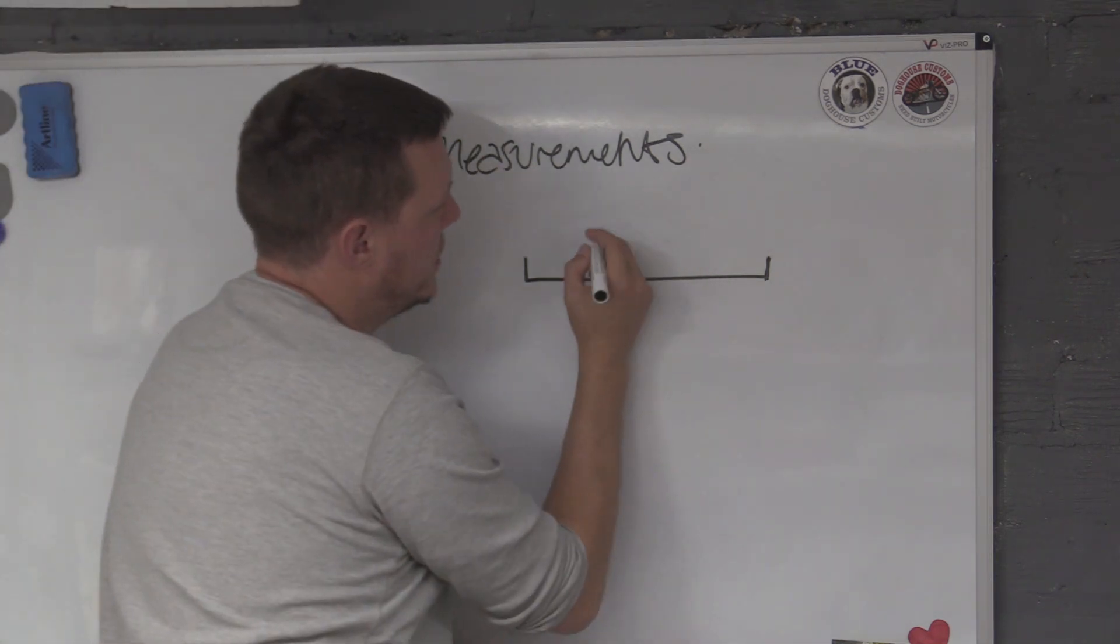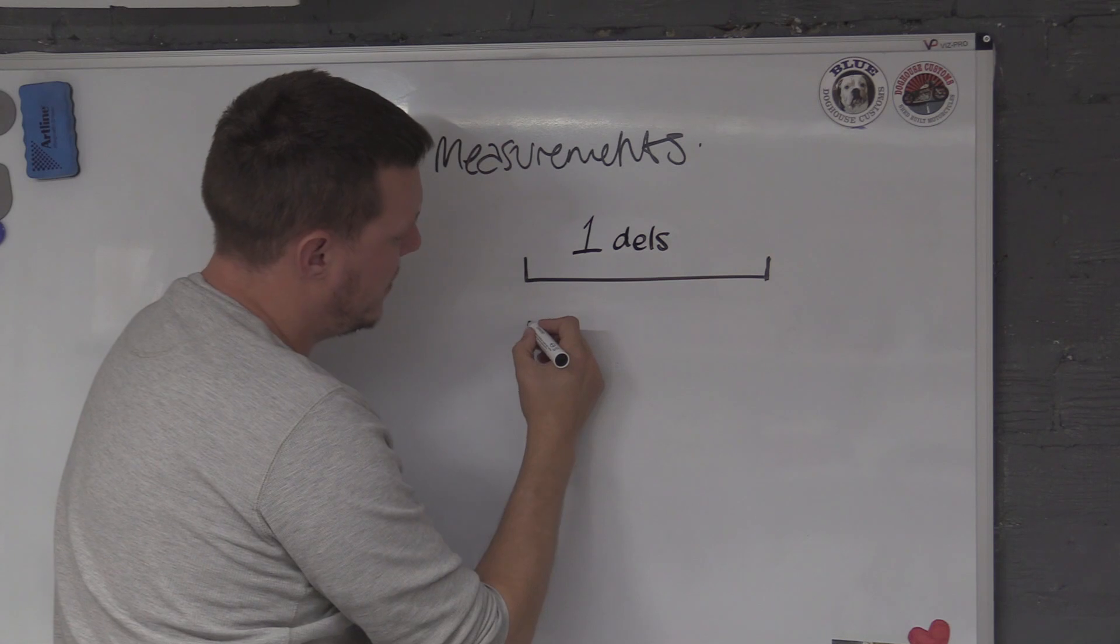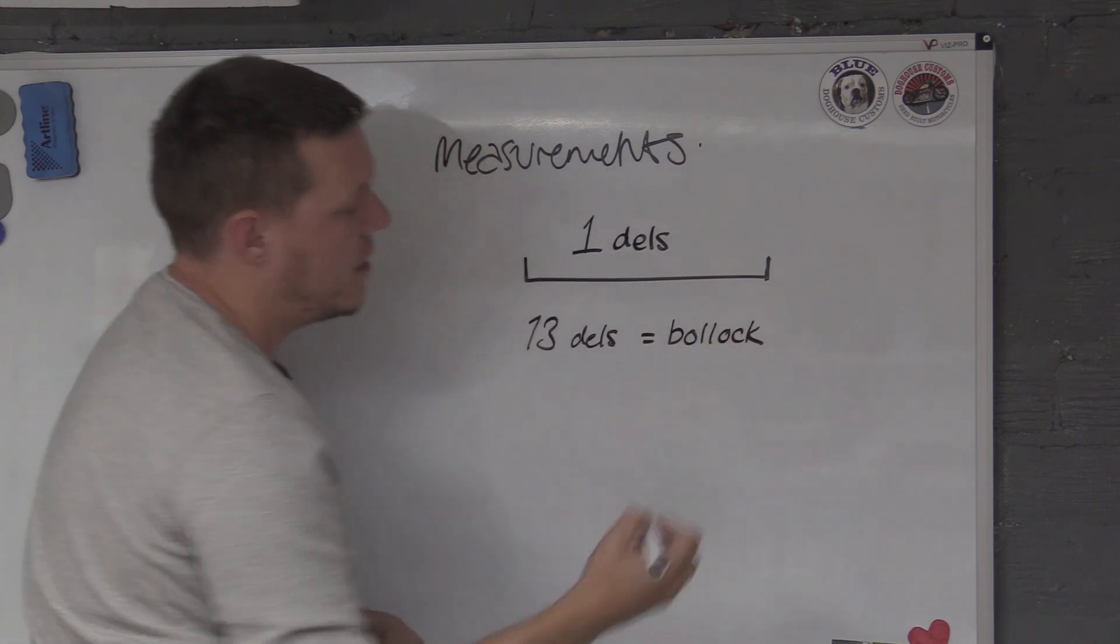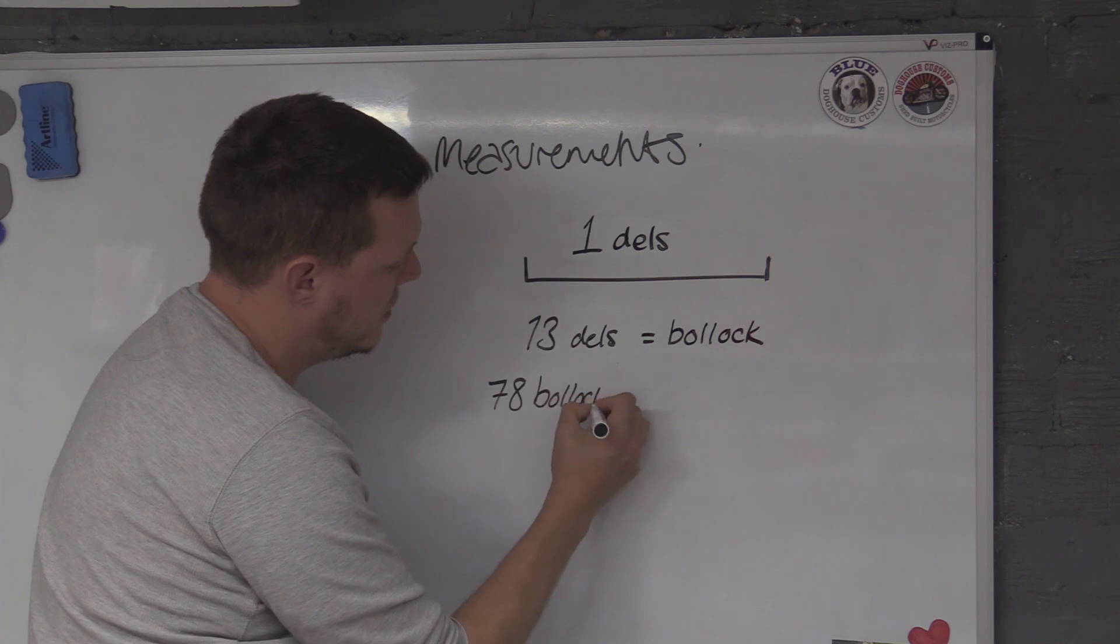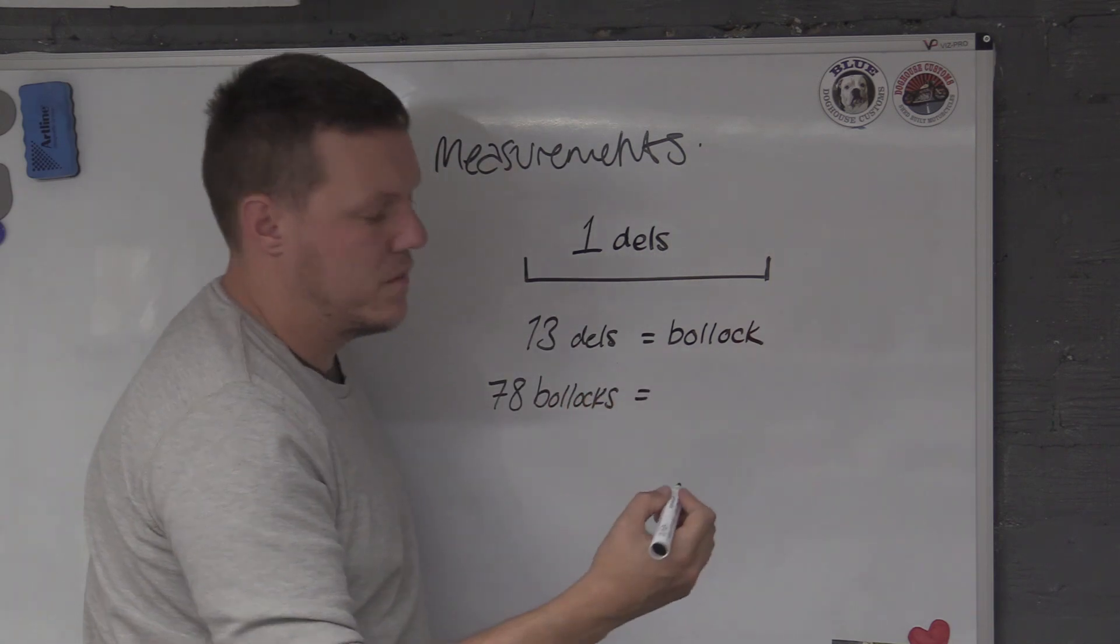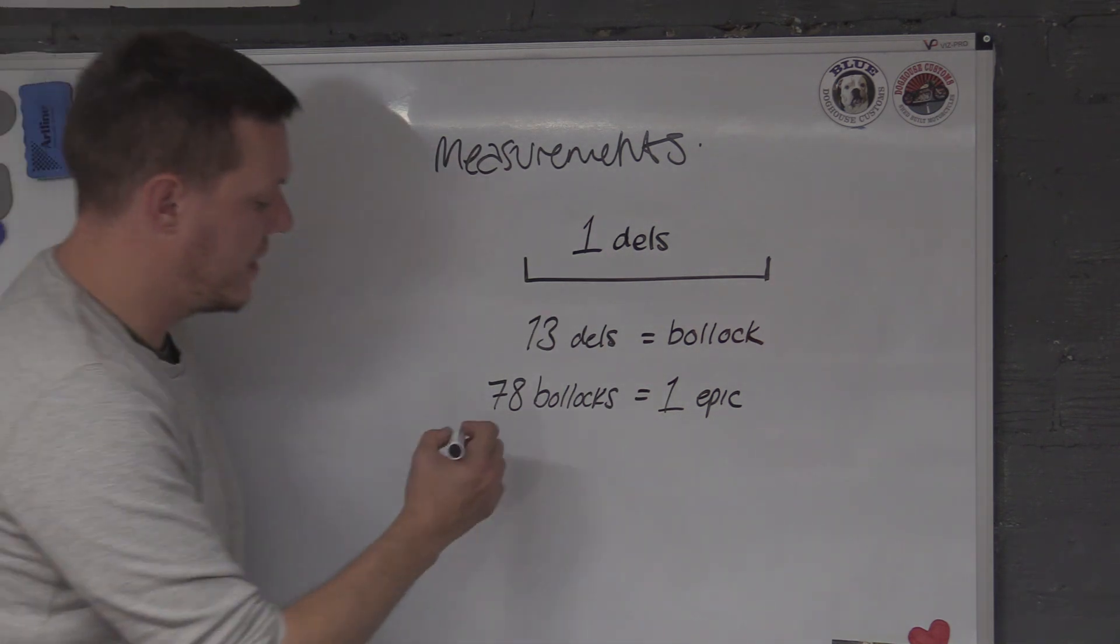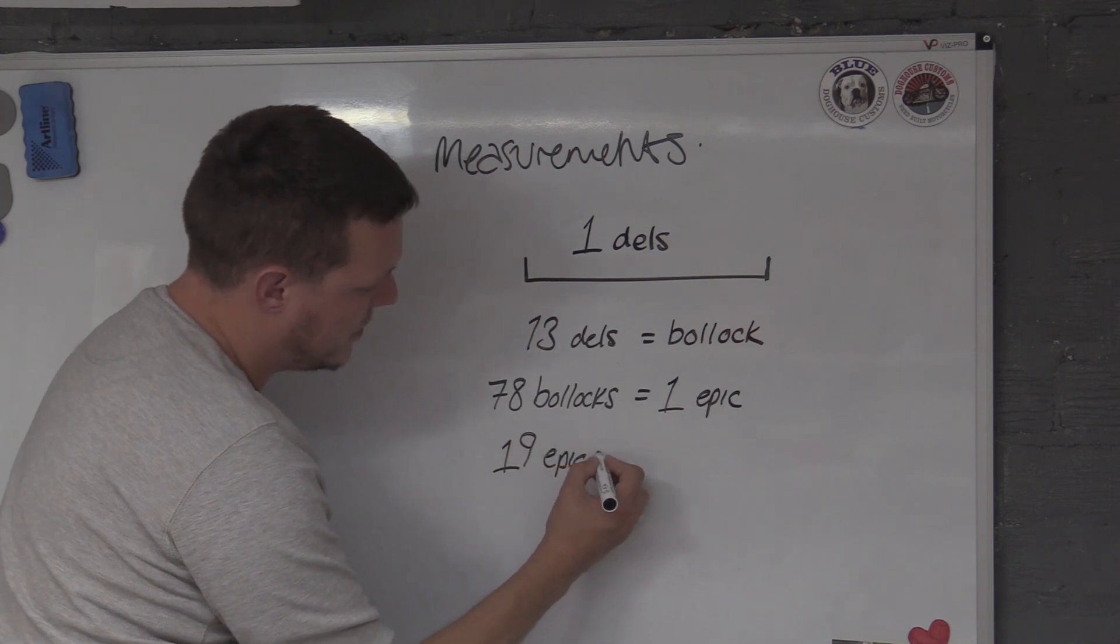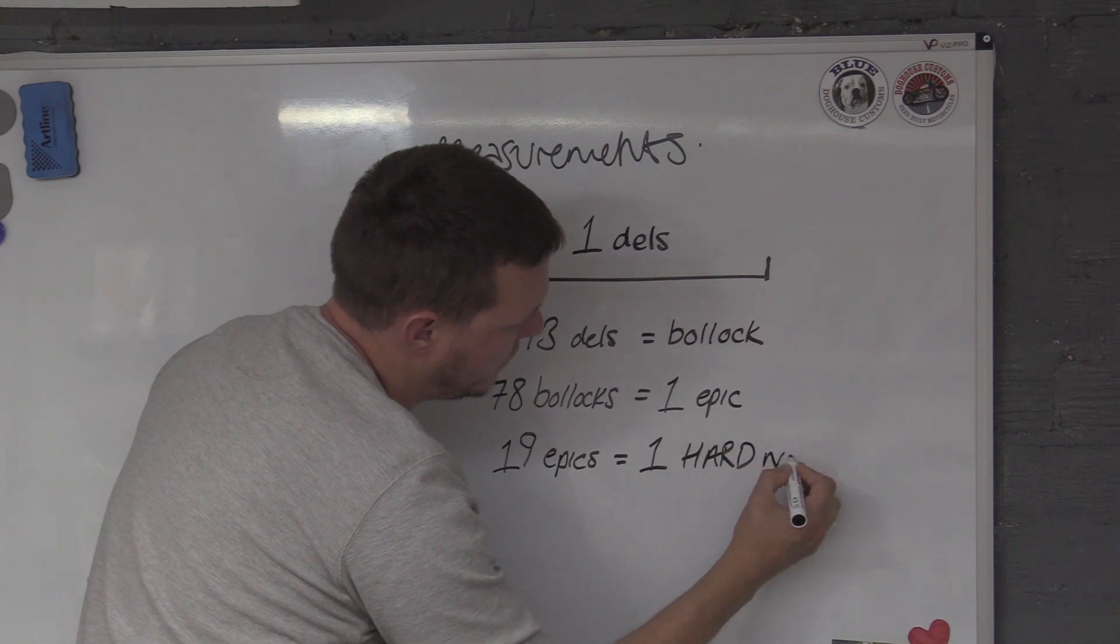What we're going to do is call this one dels. And then we're gonna say that 13 dels equals a bollock. And then we're gonna say that, let's make it difficult, 78 bollocks equal one epic. And then we'll say, let's just do one more, 19 epics equal one hard no soft.